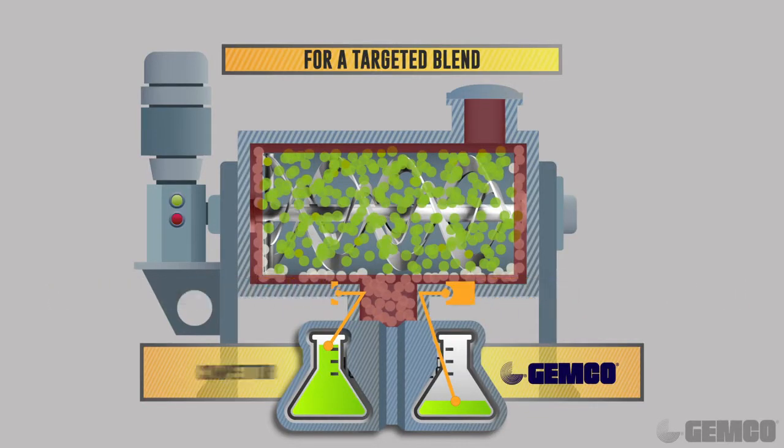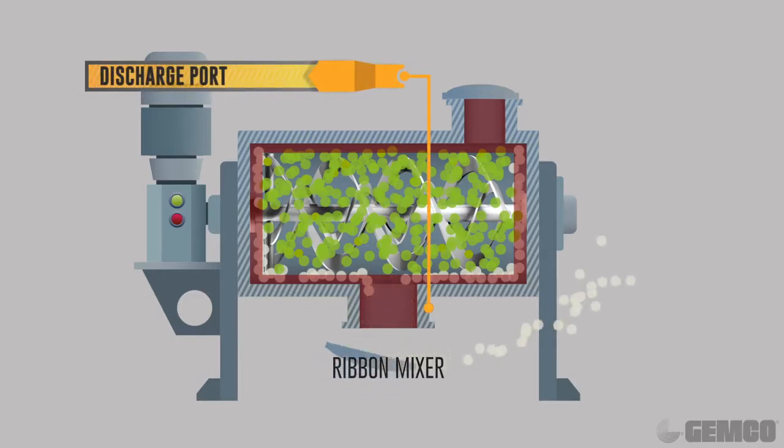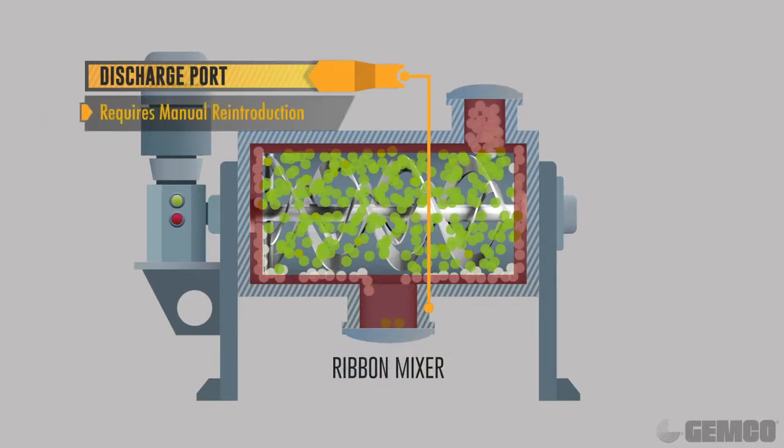Also, because these units are stationary, they have one stationary port at the bottom of the machine. This port has a long neck which isolates the material from any processing force during mixing. Many times operators need to empty the discharge area and manually reintroduce it back into the top of the mixer.